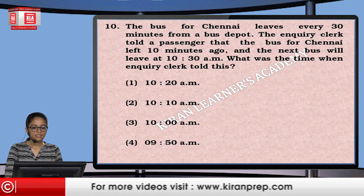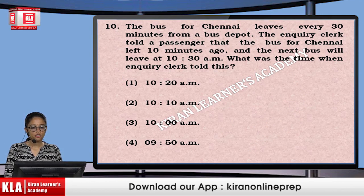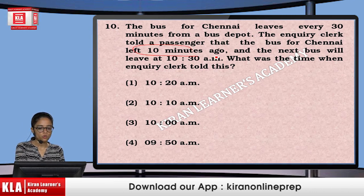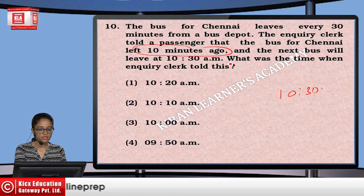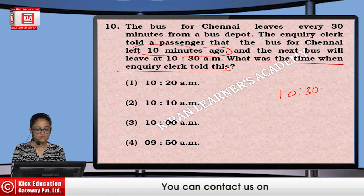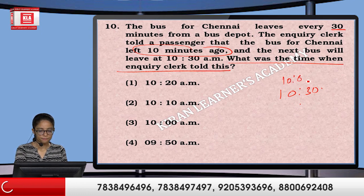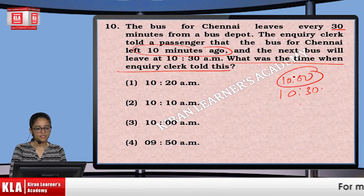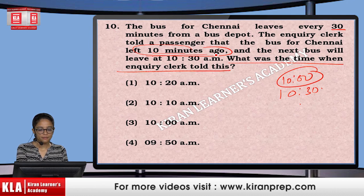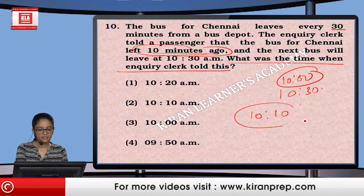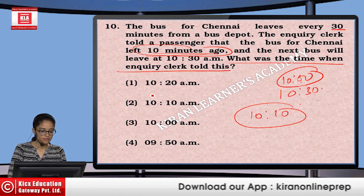Next: The bus for Chennai leaves every 30 minutes from a bus depot. The inquiry clerk told a passenger that the bus for Chennai left 10 minutes ago and the next bus will leave at 10:30. At what time did the clerk say this? The next bus is at 10:30, so the current bus left at 10:00. Since it left 10 minutes ago, the clerk was speaking at 10:10. So the answer is the second option.